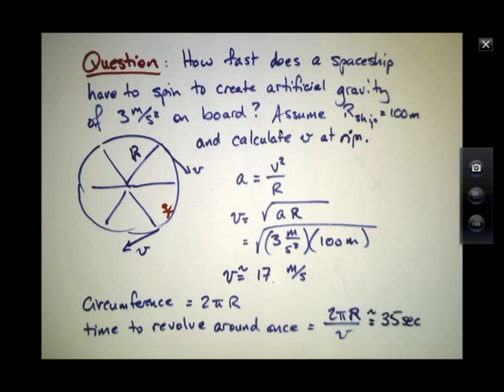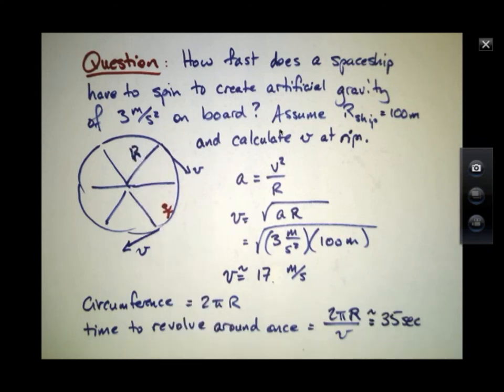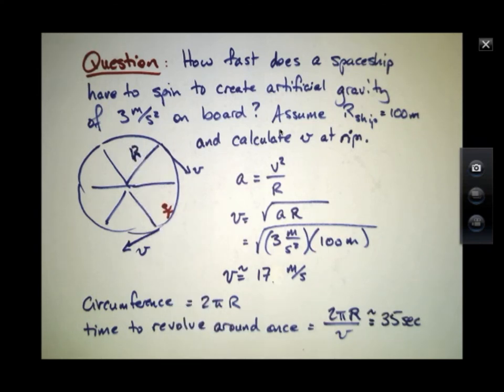Which is incredibly fast. It means this giant structure whose radius is about a football field, a little bit more in radius, has to whip all the way around in just over a half a minute. So it's a very fast moving object in order to just create this weak field of about 3 meters per second squared.